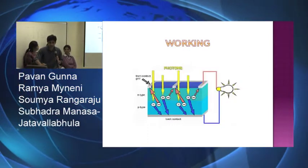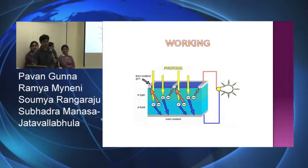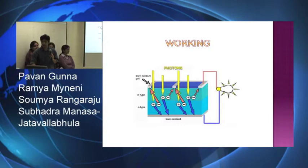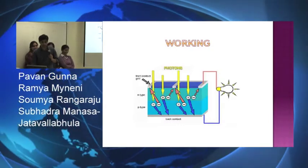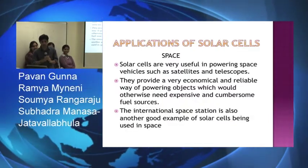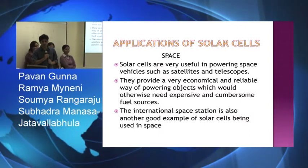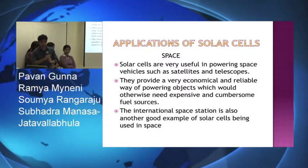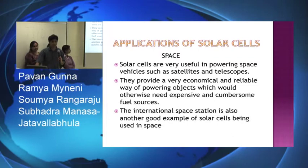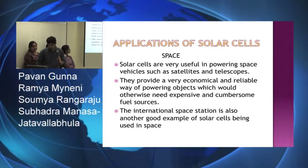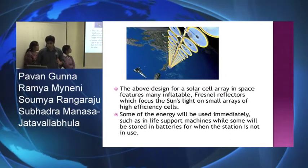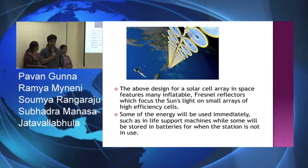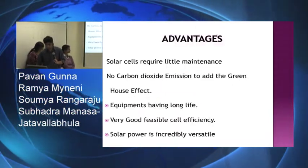The n-type is known as the negative channel and p-type is known as the positive channel. When these two are connected, we get the current and the bulb glows. The applications of the solar cell include powering space vehicles, and they are reliable and economical. They have high efficiency, the energy can be used immediately, and can be stored for later use.